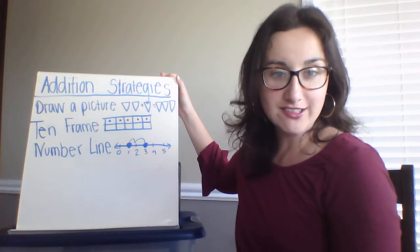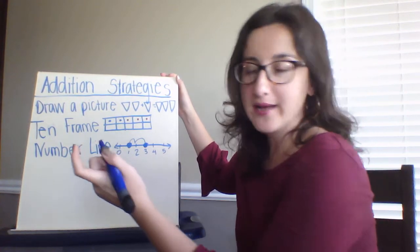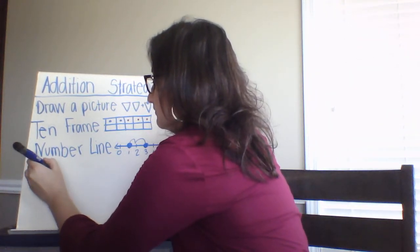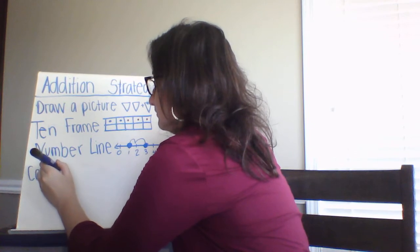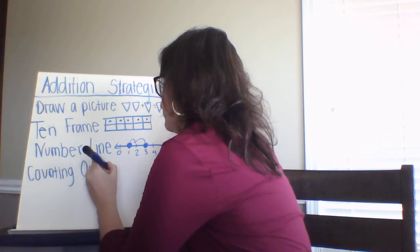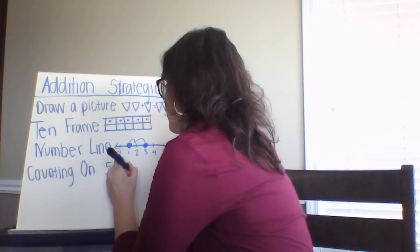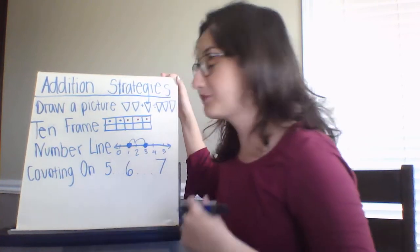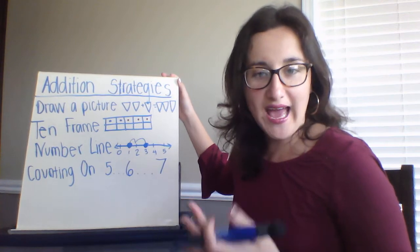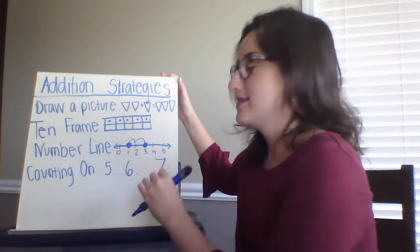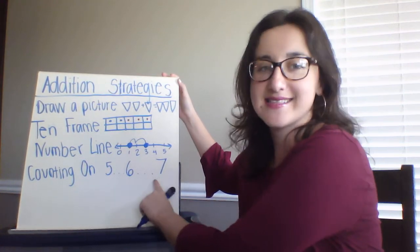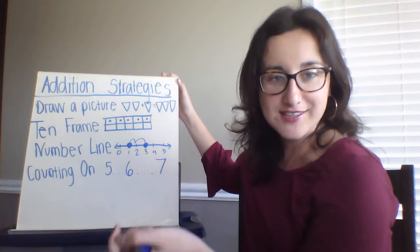Another addition strategy that you can use is counting on. If you were to use counting on as a strategy to help you add, you simply count. So you would start at five, for example, and say five, six, seven. Five plus two equals seven.